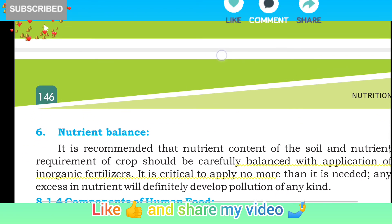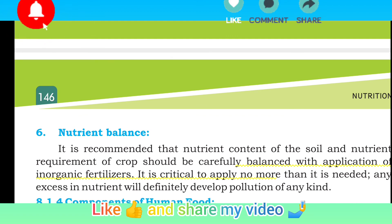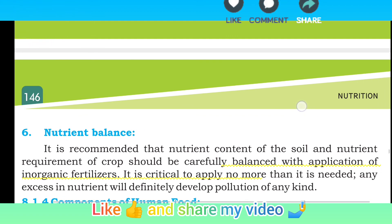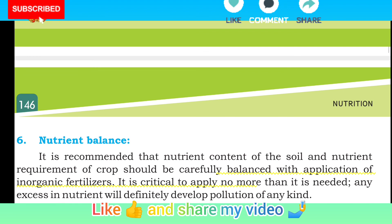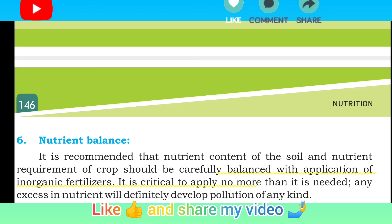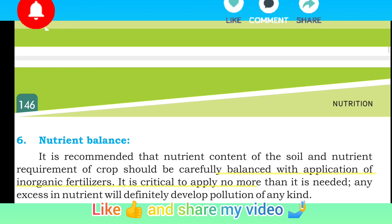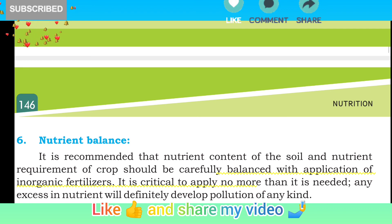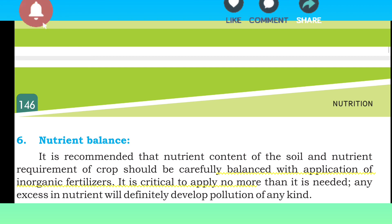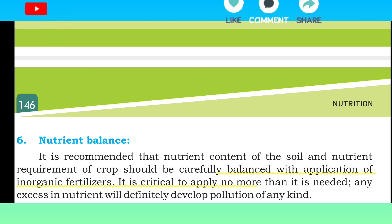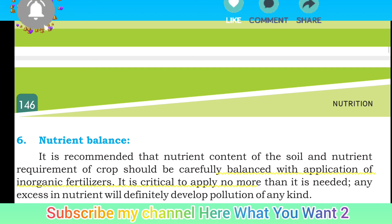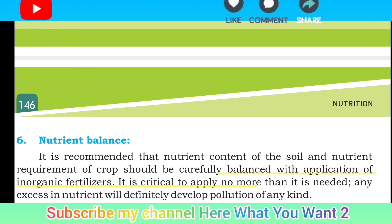Number 6: Nutrient balance. It is recommended that the nutrient content of the soil and the nutrient requirement of crops should be carefully balanced with the application of inorganic fertilizers. یعنی پودے کی nutrient requirement کا خیال رکھا جائے اور inorganic fertilizers کو نظر میں رکھتے ہوئے it is critical to apply no more than is needed — یعنی جتنی ضرورت ہے اتنی ہی fertilizers دیں۔